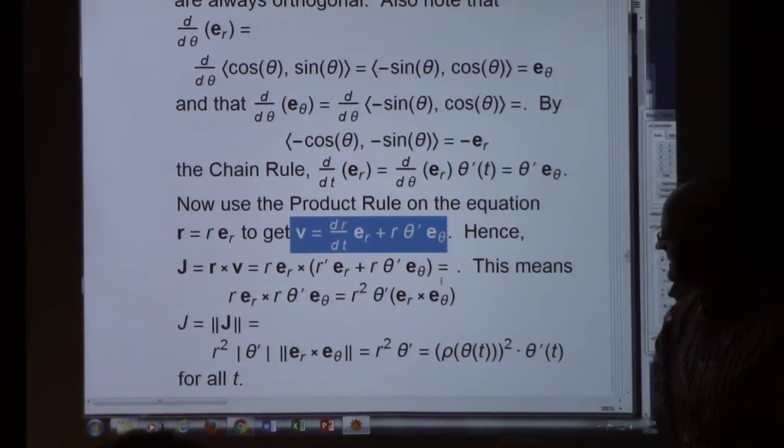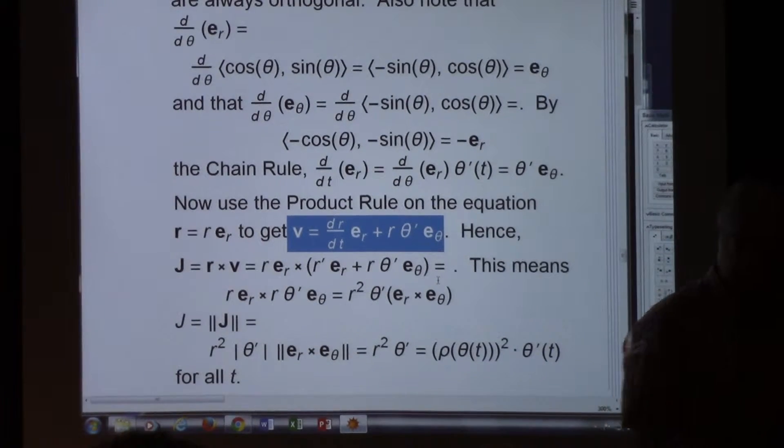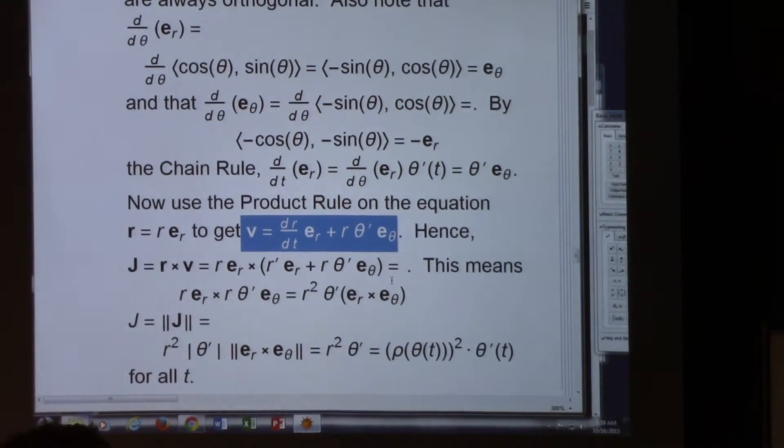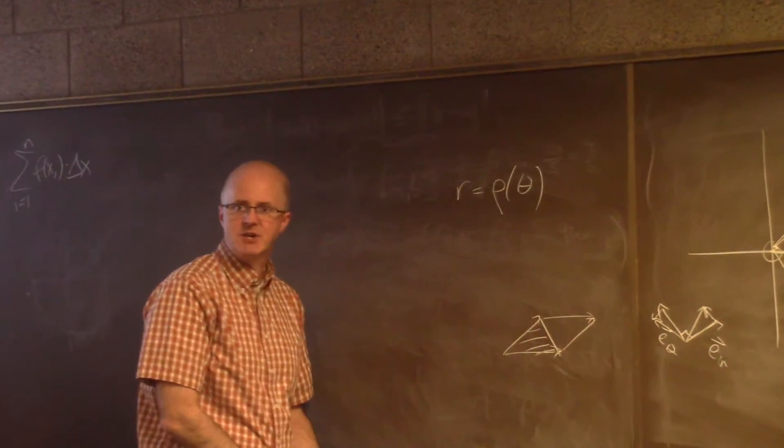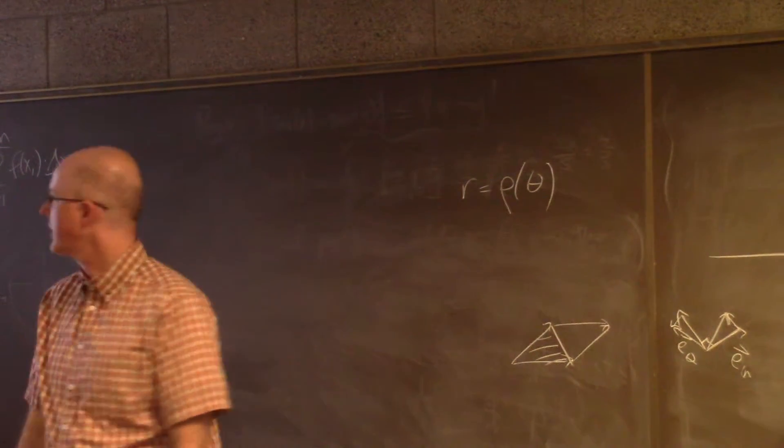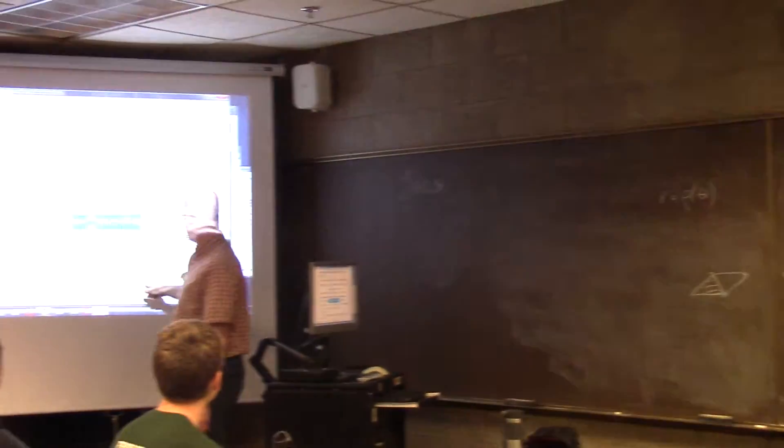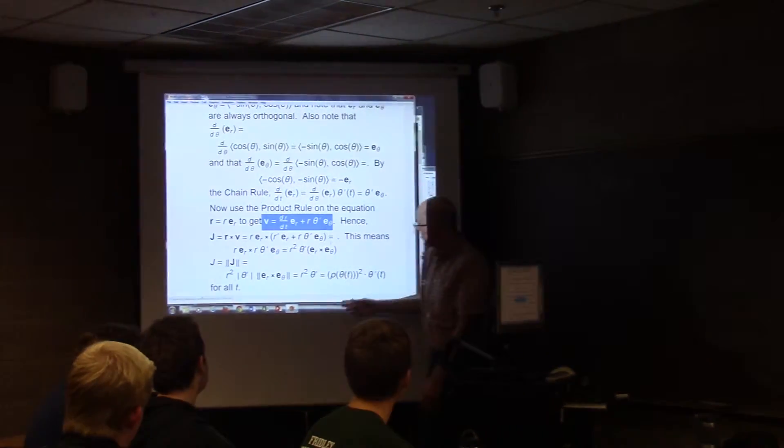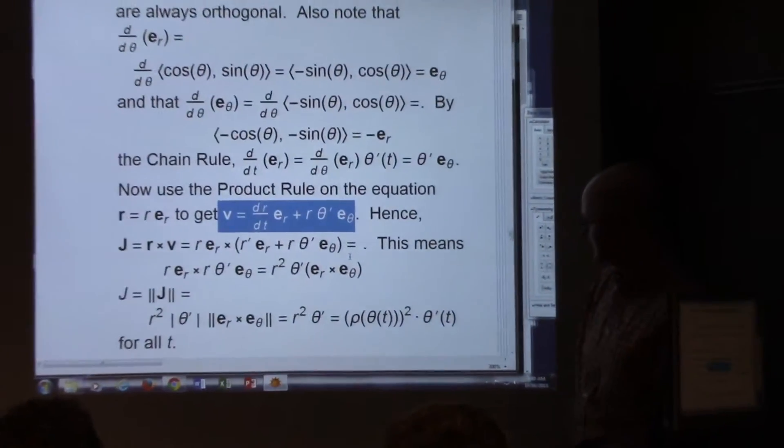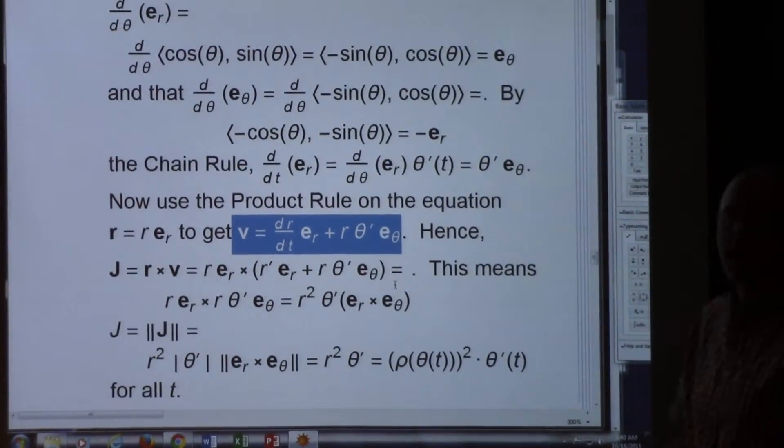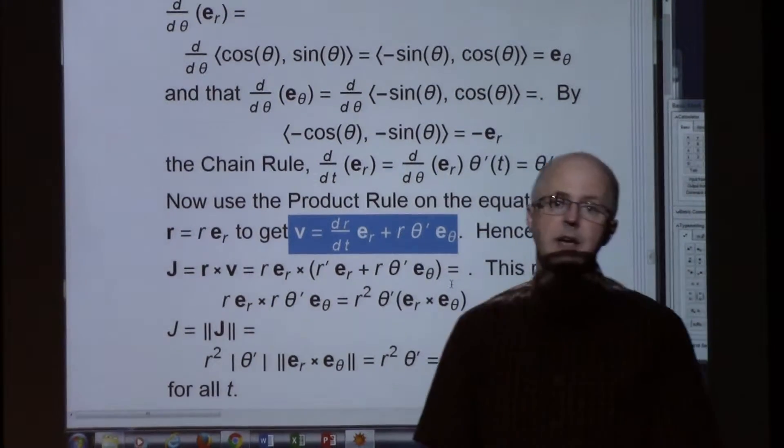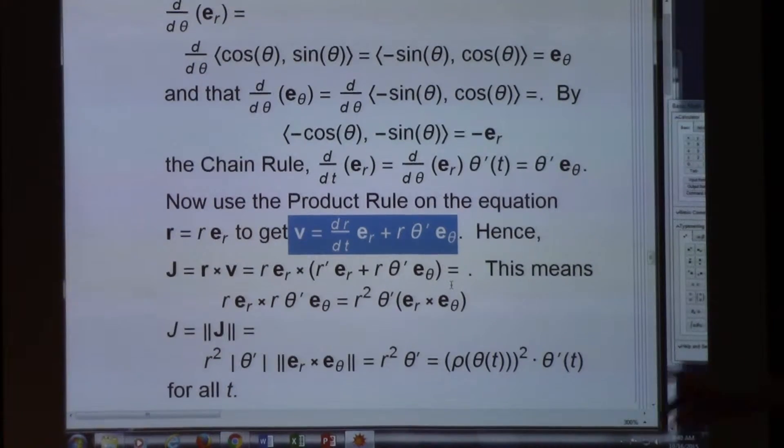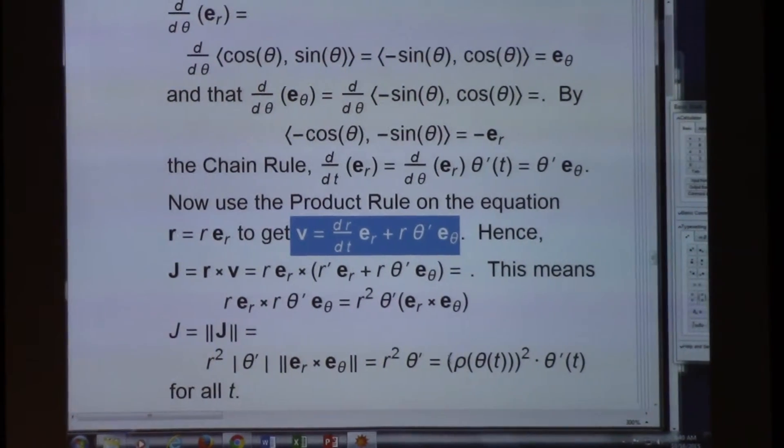Rho is just my symbol for the formula for R as a function of theta. The book doesn't do that. R as a function of theta instead of doing the polar equation of the ellipse. I'm calling the function rho. So rho equals R really. As a function of time, you can write it like this. This is true for all T, but it's going to be constant for all T. We've already derived that. J was a constant vector. Its length is going to be a constant scalar for all T. This quantity, evidently then, has to be constant for all T.